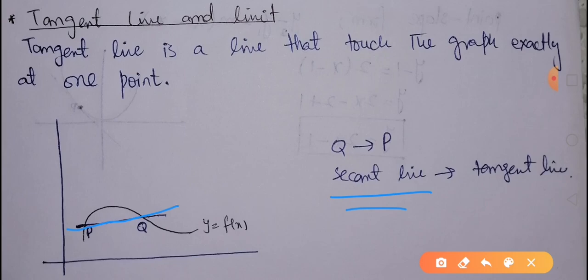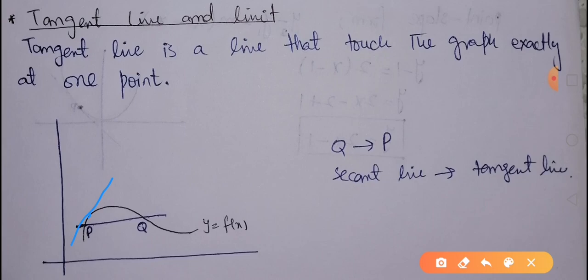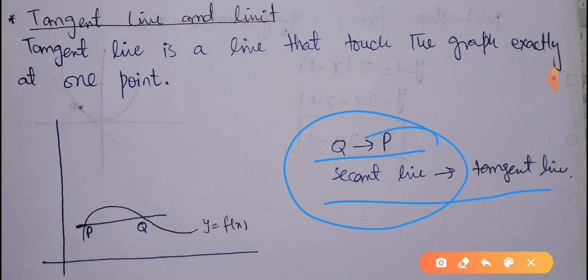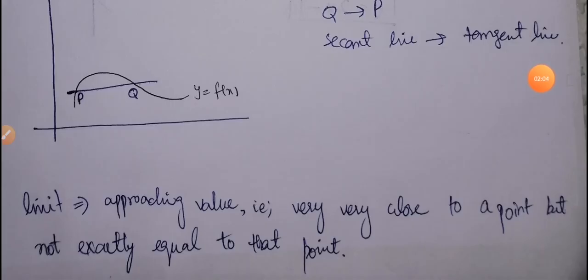The secant line becomes a tangent line when we take Q very close to P — that is, Q approaches P. Q approaches P means Q is very, very close to P but not exactly equal to P. As Q gets closer and closer to P, the secant line approaches the tangent line. This is the essence of a limit: we take values very close to a particular point but not exactly equal to that point. A limit stands for an approaching value — very close to a point but not exactly equal to it.